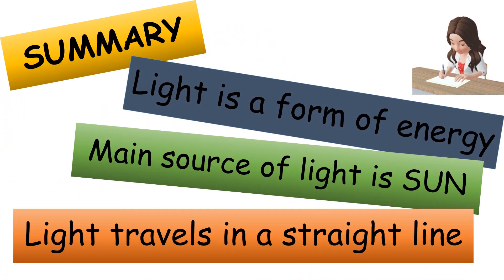Let's do a summary of our lesson. We have learned light is a form of energy. The main source of light is the sun. Light travels in a straight line.